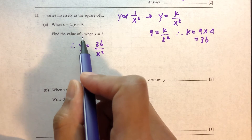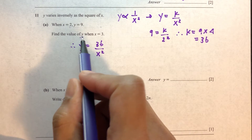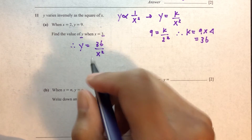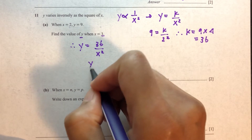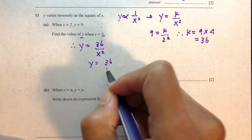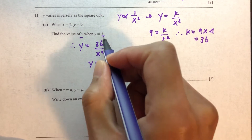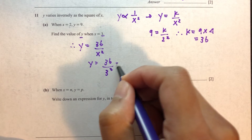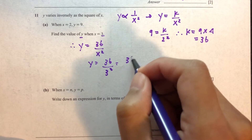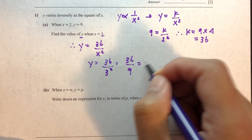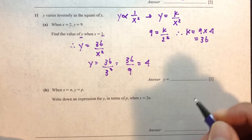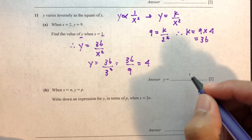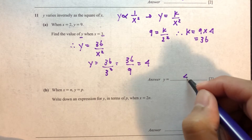The equation now becomes y equals 36 divided by x squared. We need to find the value of y when x equals 3. So y equals 36 divided by 3 squared, which is 36 divided by 9, which is 4. And that is the answer for part A.